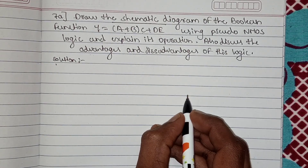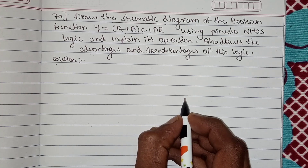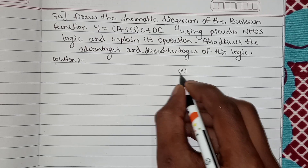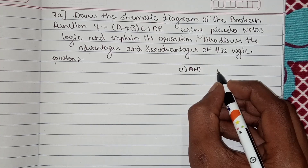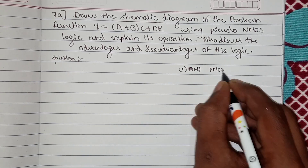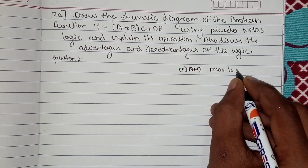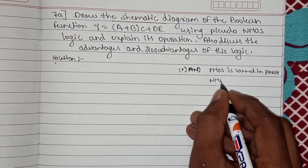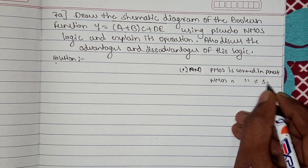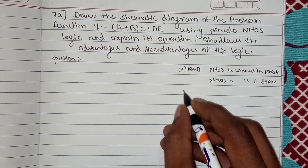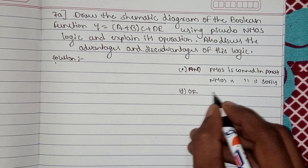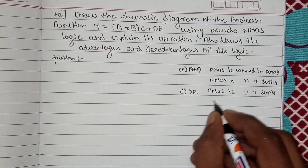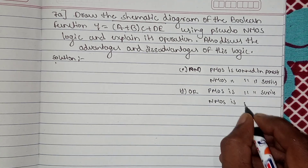Before drawing the schematic, we have some rules. Whenever an AND operation occurs between operands, the PMOS transistor is connected in parallel and the NMOS transistor is connected in series. Whenever an OR operation occurs, the PMOS is connected in series and the NMOS is connected in parallel.